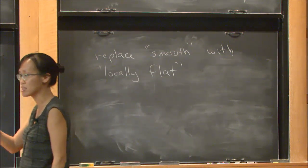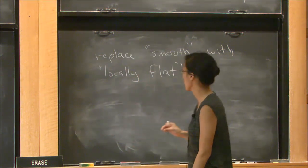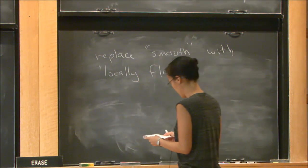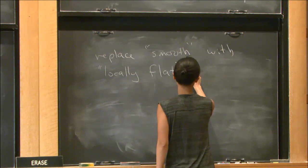Locally flat—yes, it has a product neighborhood, that's right. Okay, and then if you do that, you obtain the topological concordance group.